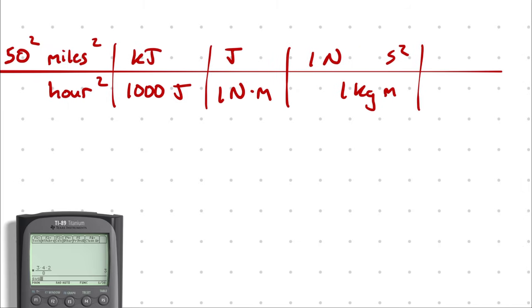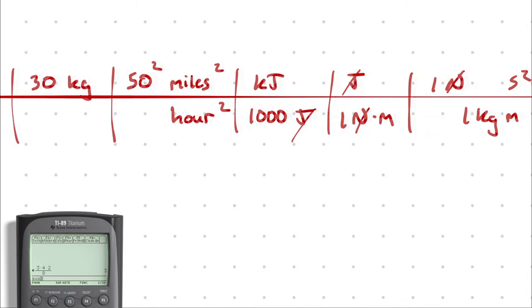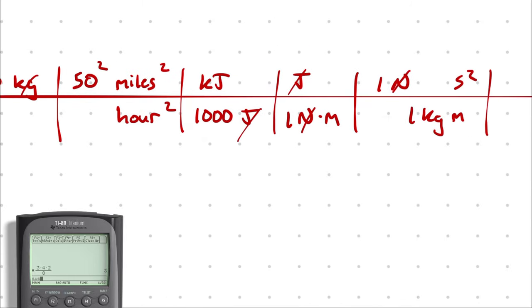And at this point, newtons will cancel newtons, joules will cancel joules, and kilograms will cancel kilograms. So in order to be left with kilojoules in the numerator and nothing else, I need to get meters and meters in the denominator to cancel miles squared in the numerator.